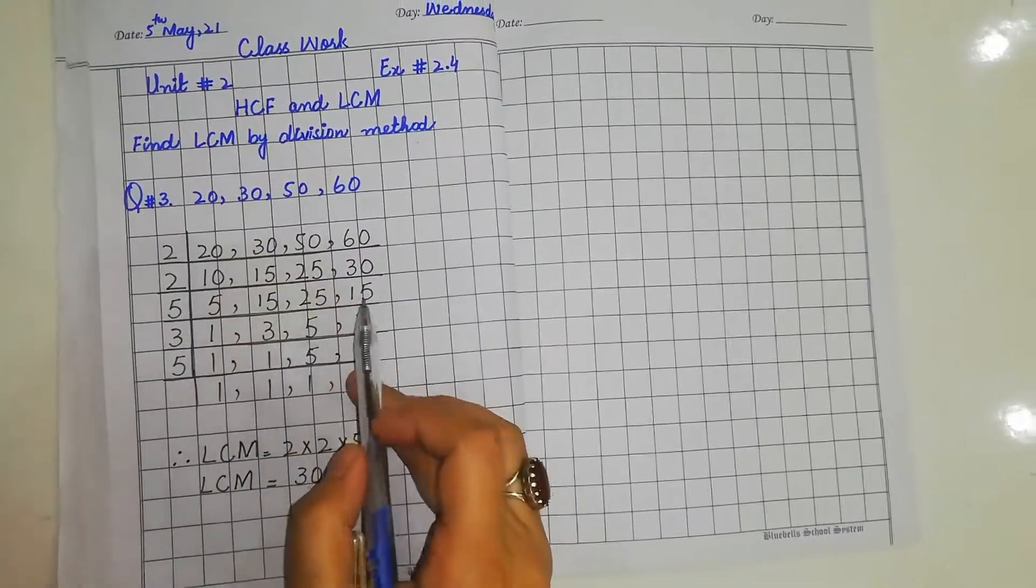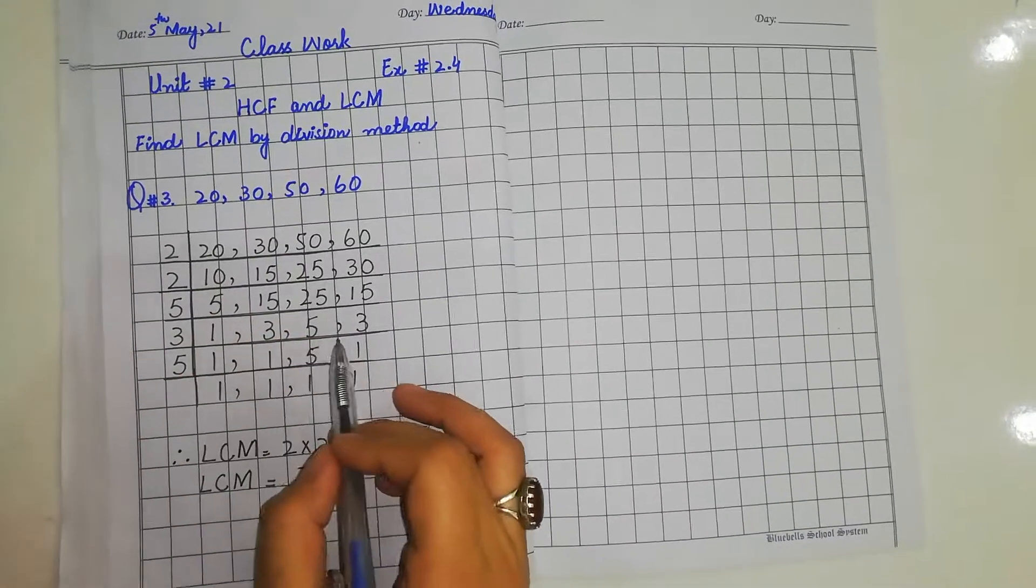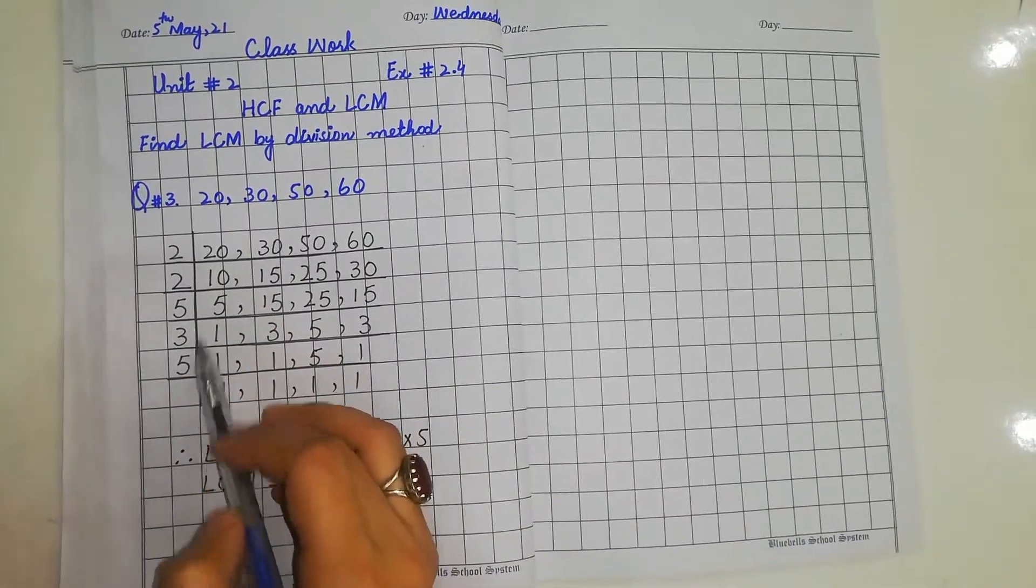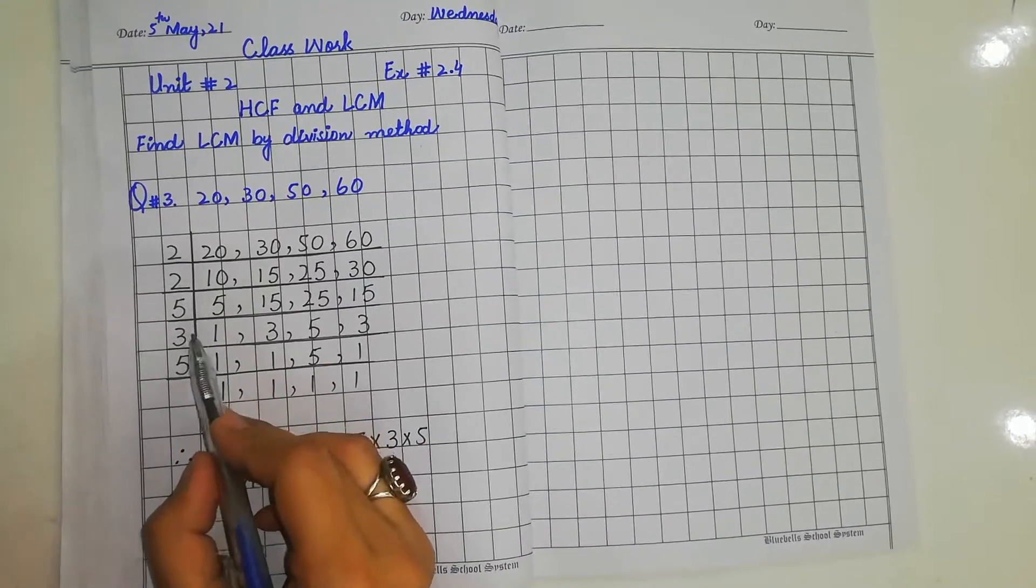We will divide them together. We have divided them here and the prime factors are 2, 5, 2, 2, 5, 3, 5.